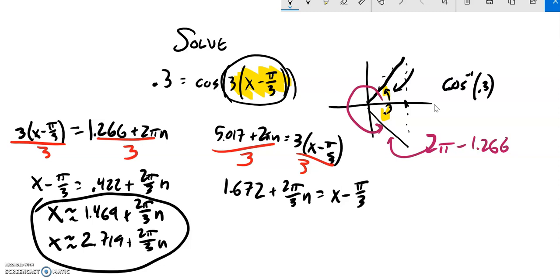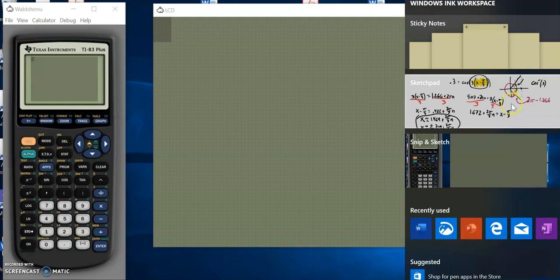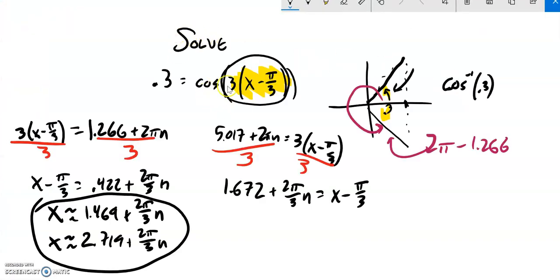If I think back, my original equation was cosine of 3 times x minus π/3.